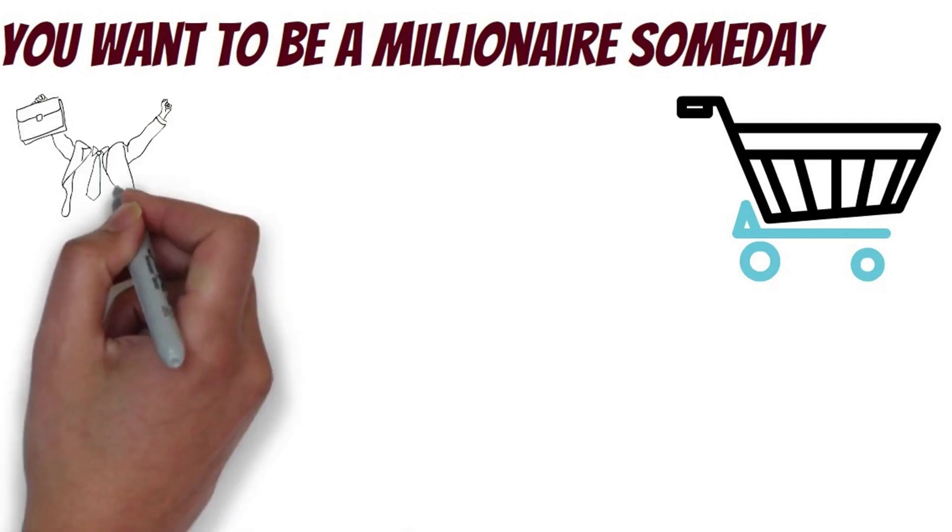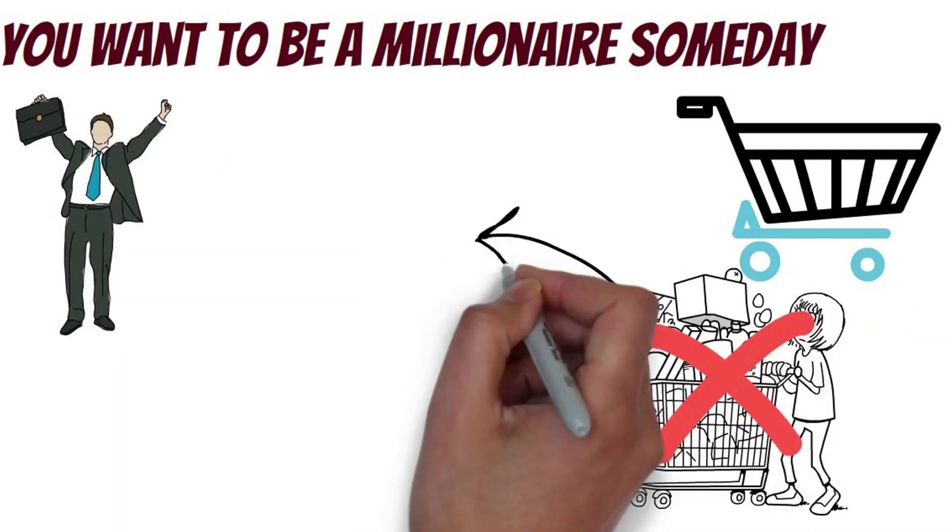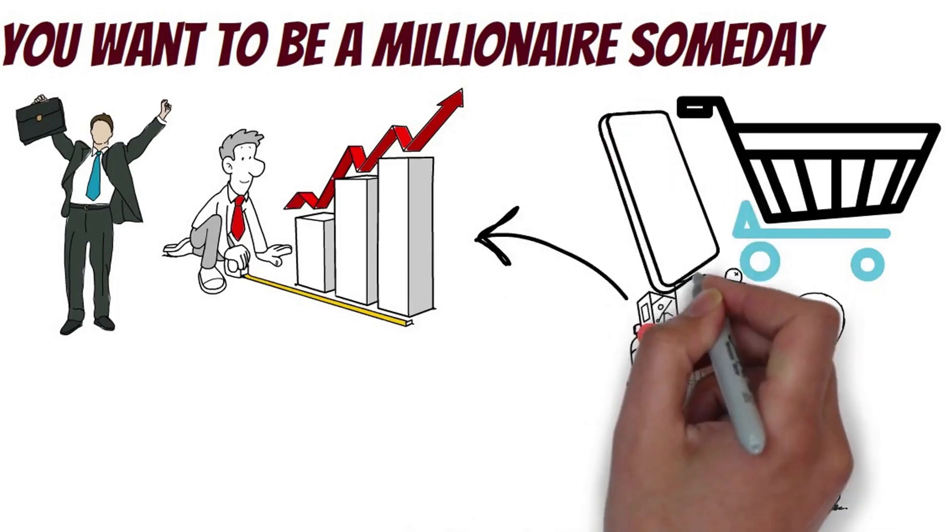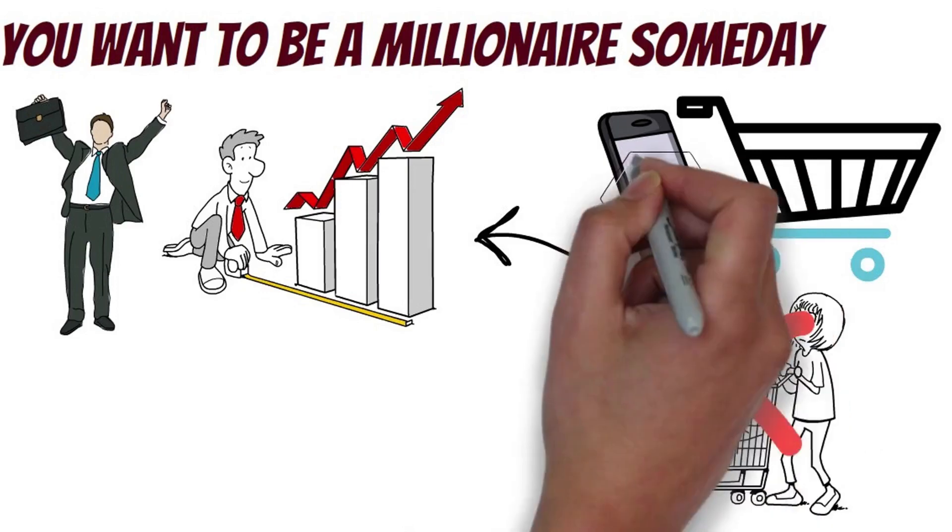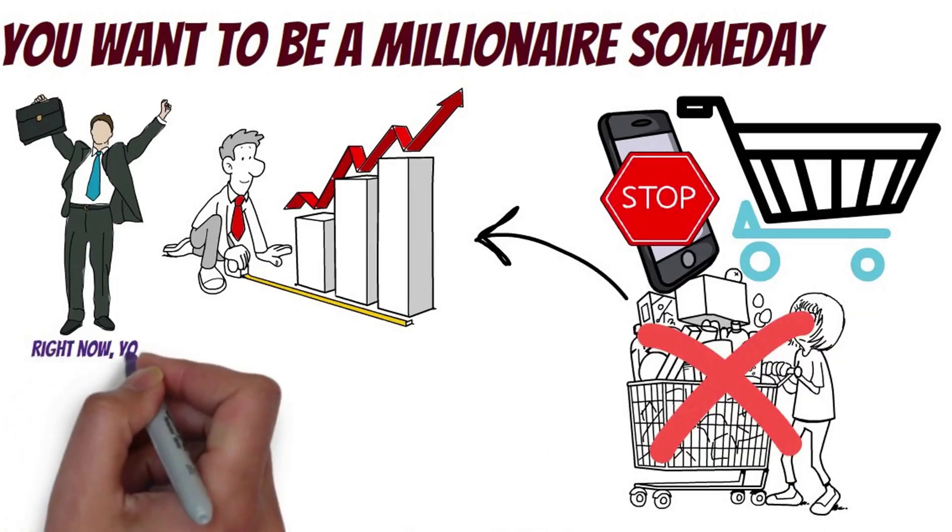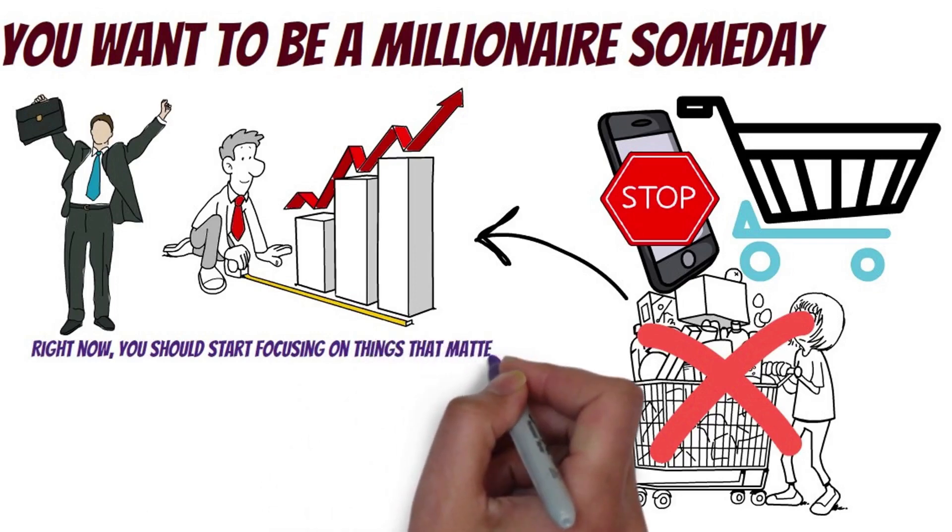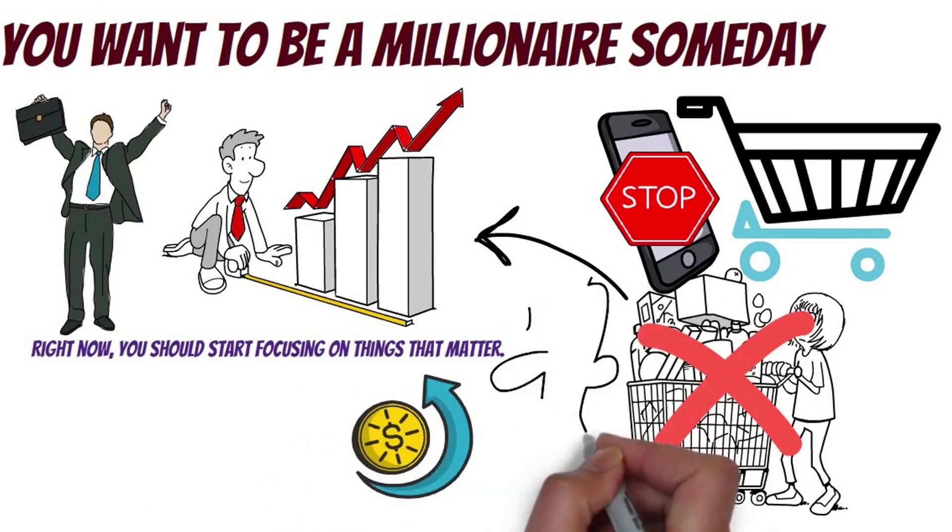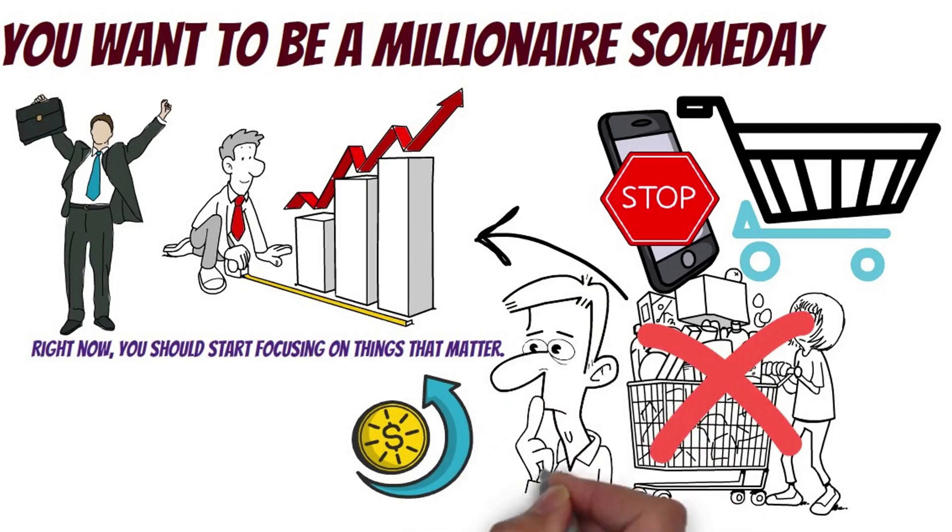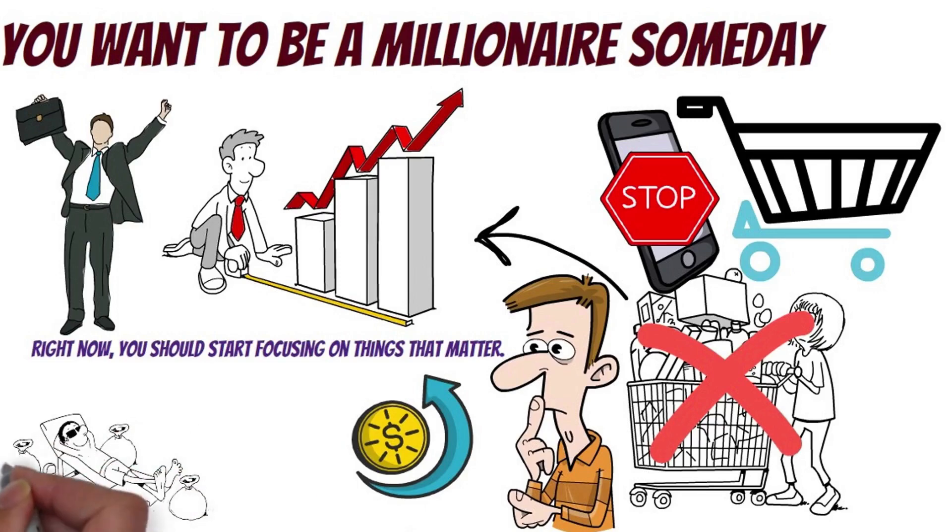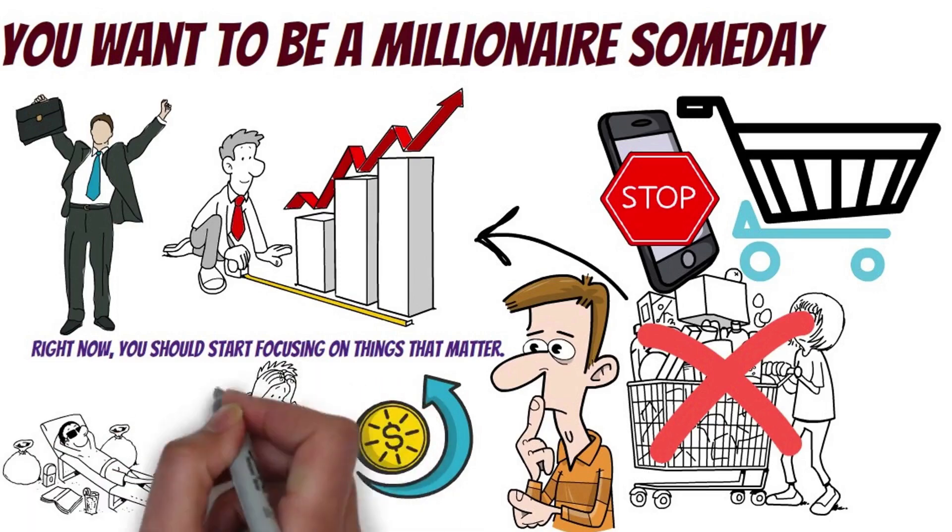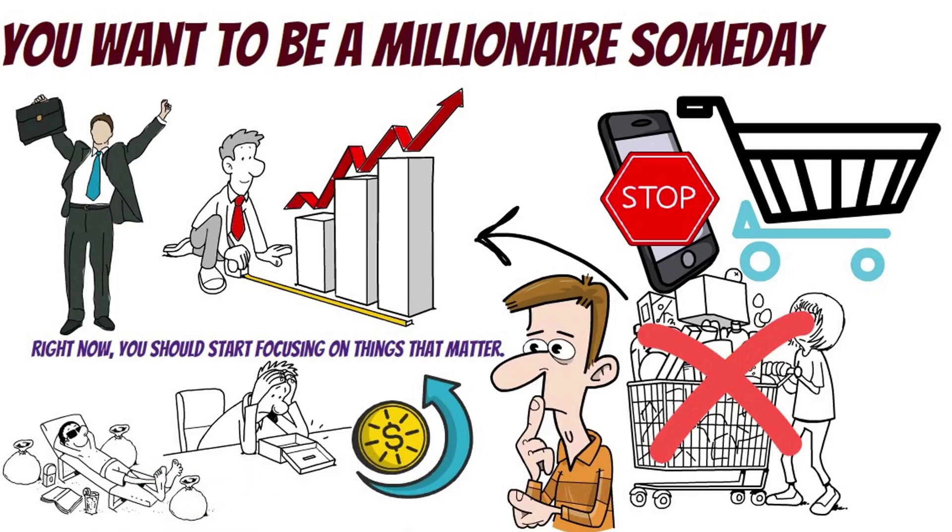A true millionaire does not find the need to spend money on material things that would not generate income. If you're always following the trend and want to always have the most updated gadget and fashion trend, stop it right away. You should start focusing on things that matter, things that will grow your money. These millionaires have the luxury to have total control of their time because most of them are entrepreneurs and business owners. That is not the way to becoming rich.